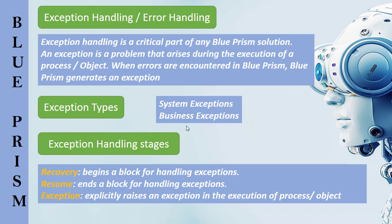Now we will see the types of exceptions in Blue Prism. One is system exceptions, another one is business exceptions. System exceptions happen in purely technical situations. These exceptions are typically handled by cancelling the current case, flagging it with exception details, and moving on to the next one in the scheduled queue.